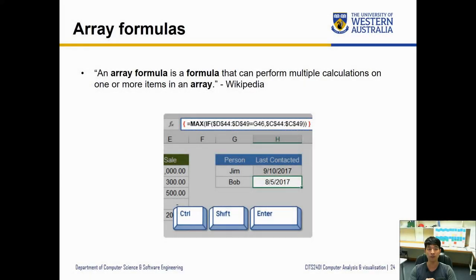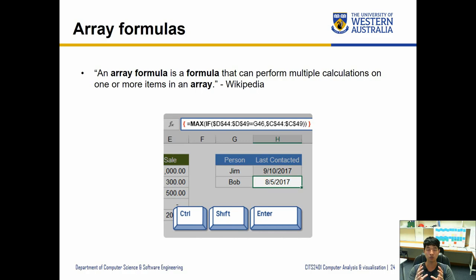The next item is array formulas. An array formula is a special type of formula that can perform multiple calculations on one or more items in an array. Previously when we were using formulas, it was calculating a value that gets put into a cell, but what an array formula does is it uses the same calculations over arrays — a selection of cells — and applies the same operation across them.